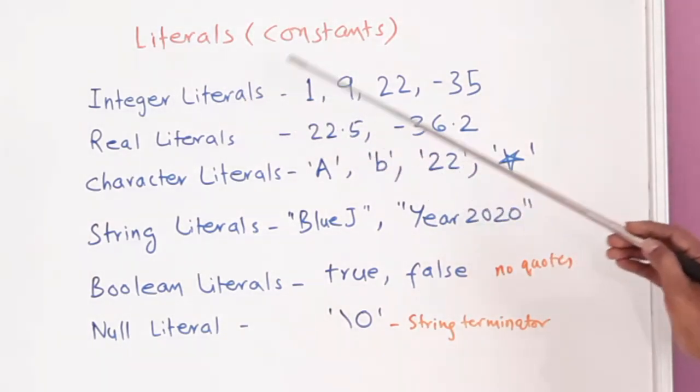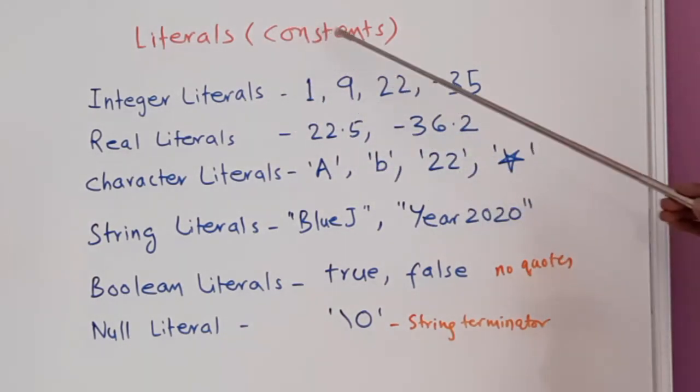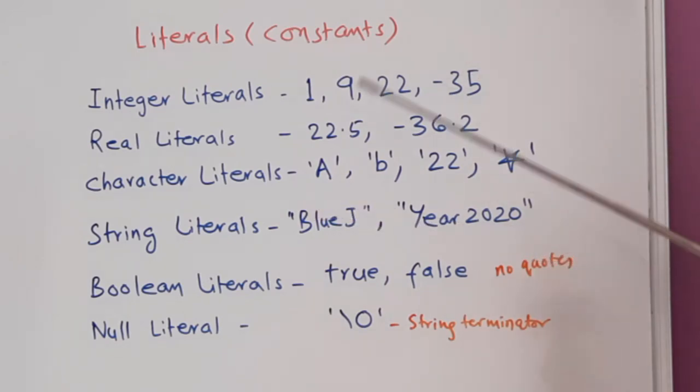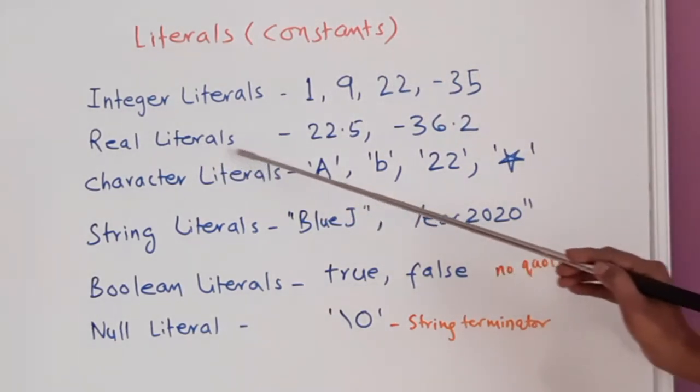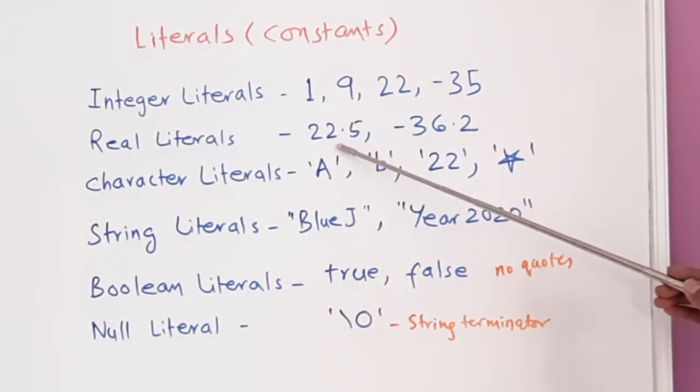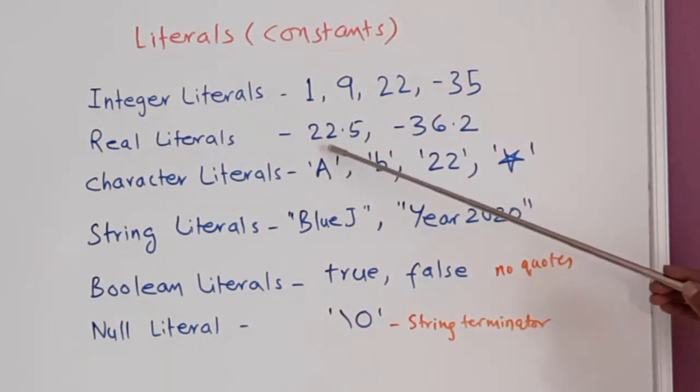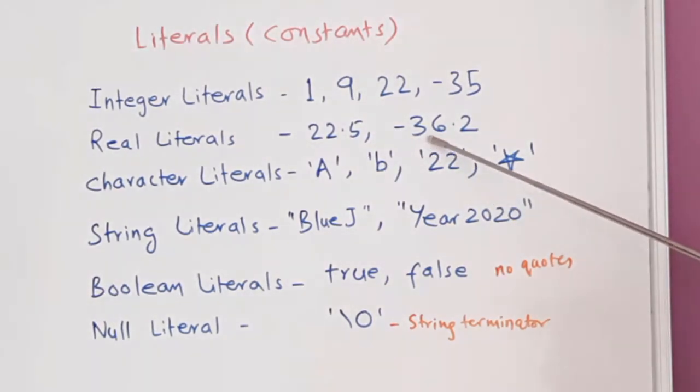Integer literals are the integers. For example, 1, 9, 22, minus 35. They can be positive or negative both. Real literals are those which use a decimal point in the number. For example, 22.5, minus 36.2. These are real literals.